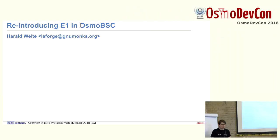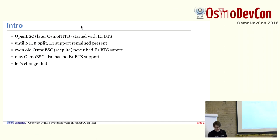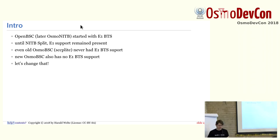Re-introducing E1 and Osmo BSC. As most of you know, we started originally with E1-based BTSs. OpenBSC and later Osmo NITB started with E1-based BTSs as the ABIS interface towards the base station, and until the NITB split, E1 support also remained present and maintained in Osmo NITB, so we could have E1-based BTSs as well as IP-based BTSs. But even the original Osmo BSC implementing SCTP Lite never had E1-BTS support.